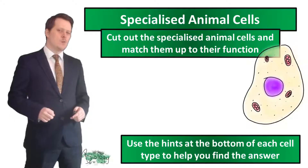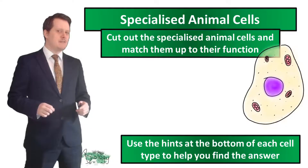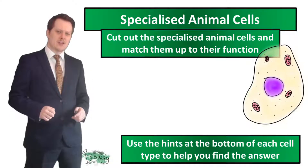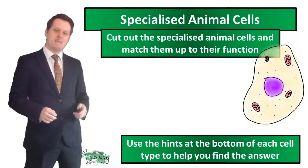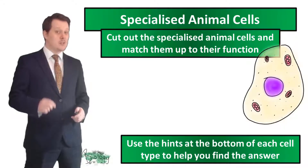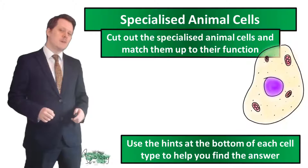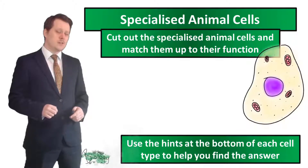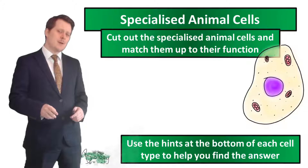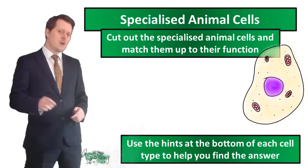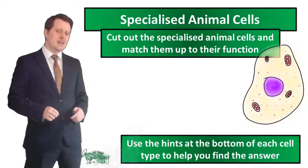If you've got the worksheet, our first task is to cut out all the specialized cells and match them up to their function. You're going to need to use the hints at the bottom of each picture to help you find the answer. If you are doing the cut and stick activity on the worksheet, pause the video now, and when you're finished unpause the video and we'll go through the answers together.